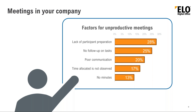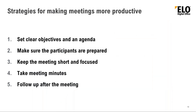But it could be so easy, because there are strategies for making meetings more productive. For example, set clear objectives and an agenda. Surprisingly, most meetings don't have an agenda — some meetings should have been an email instead. If you set clear objectives and an agenda, then participants can come prepared, and they know what to prepare for. When there's no agenda, nobody knows what to prepare.